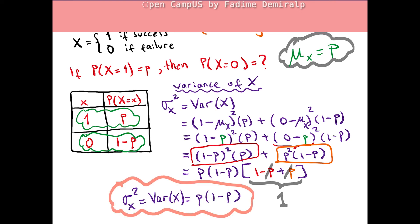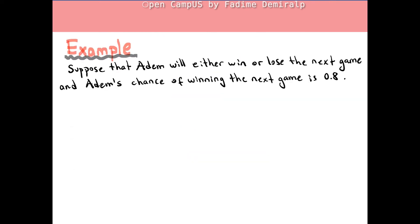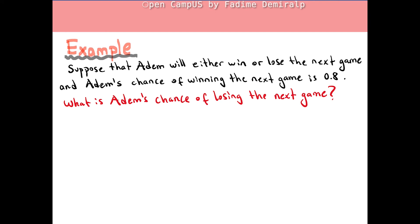In an example, suppose that Adam will either win or lose the next game, and Adam's chance of winning is 0.8. The first question: what is Adam's chance of losing the next game? There are two outcomes — winning or losing — and the probability of winning is 0.8. Then the probability of losing is 1 minus 0.8, which is 0.2.